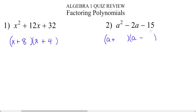We have to think of two numbers that multiply together to make 15 and add together to make 2. Why 2? Because when we add a positive and a negative together, we actually subtract. So what are two numbers that multiply together to make 15 and have a difference of 2? That's going to be 5 and 3, because 5 times 3 is 15 and 5 minus 3 is 2.